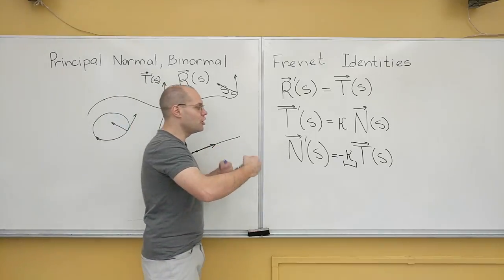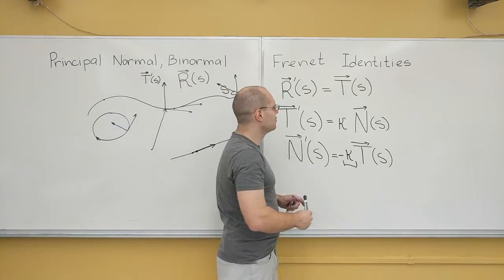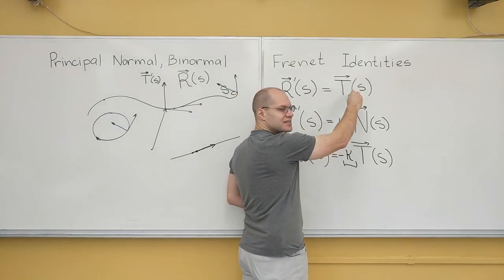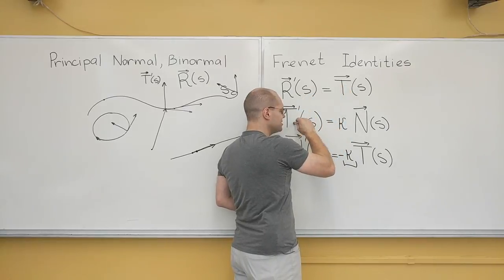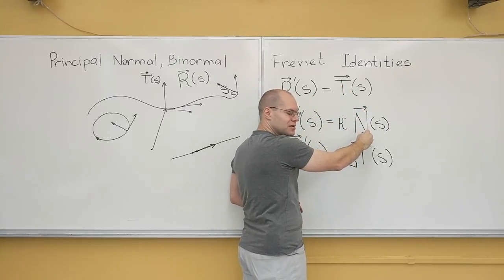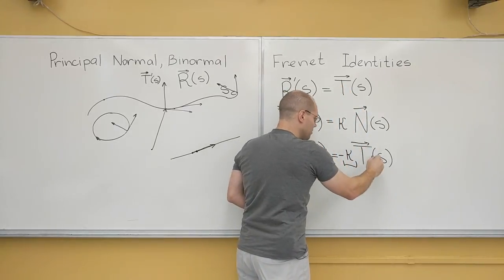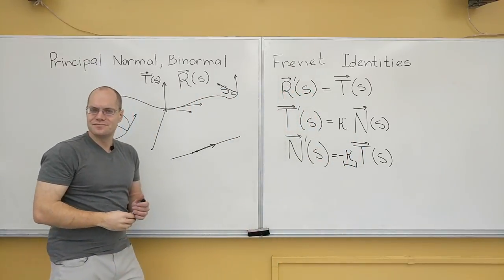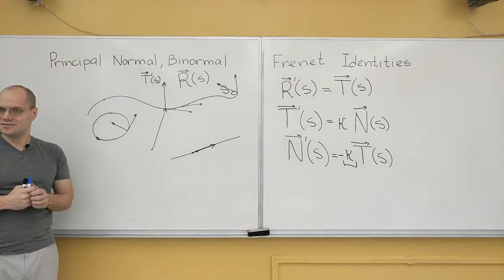The system closed on itself. You start with the position vector, you get the tangent. You take the derivative of the tangent, you get the principal normal. You take the derivative of the principal normal, you get the tangent back. The system closes on itself.